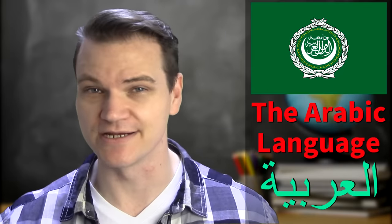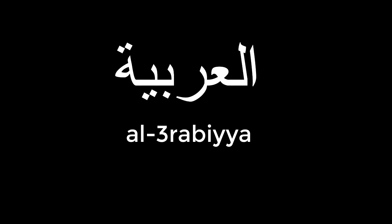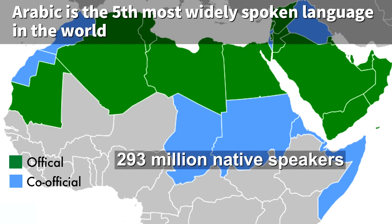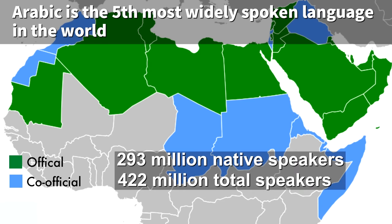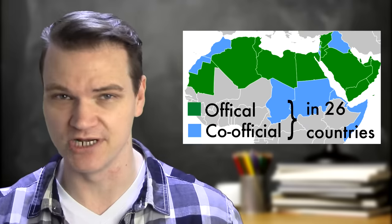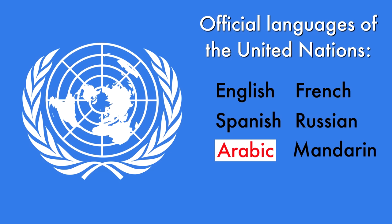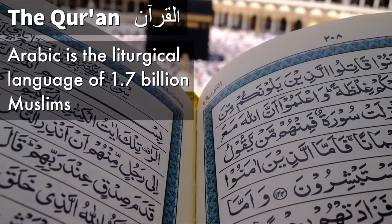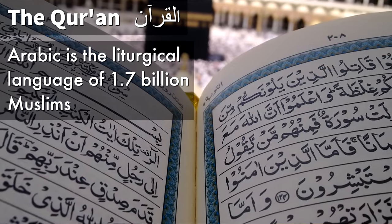Hello everyone, welcome to the LangFocus channel and my name is Paul. Today's topic is the Arabic language, or Al-Arabiya as it's called in Arabic. Arabic is the fifth most widely spoken language in the world, with 293 million native speakers and 422 million speakers in total. It's an official language in 26 countries — not necessarily the majority language in all of them, but one of the official languages. It is also one of the six official languages of the United Nations, and as the language of the Quran, the Holy Book of Islam.